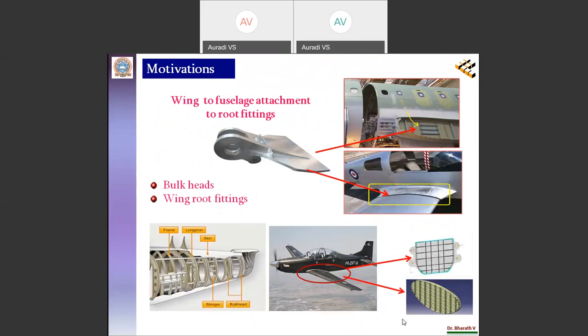Motivation behind this research work is, before starting this work, a lot of interactions have been made with design engineers from HAL Bangalore. During the interactions we came to know that a lot of efforts are being made to reduce the weight of aircraft components such as bulkheads and wing root fittings by using AL2014 alloy. Hence, to overcome this, AL2014 alloy was reinforced with AL203 particulates.